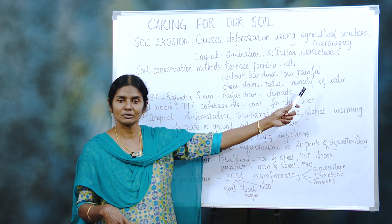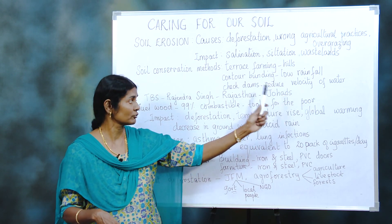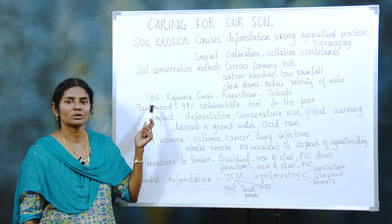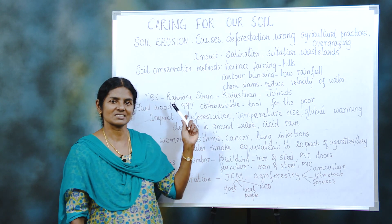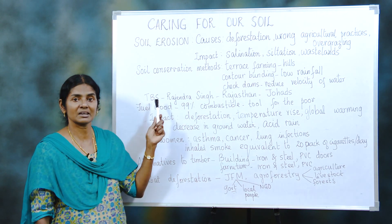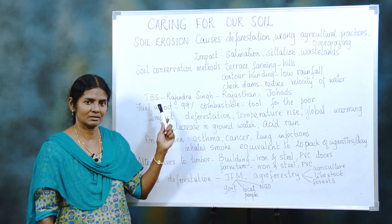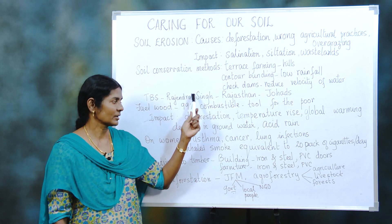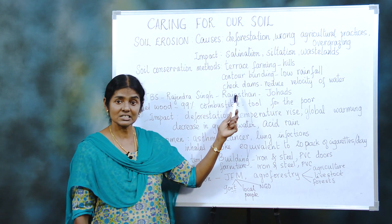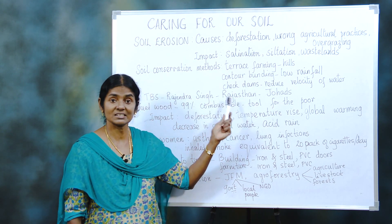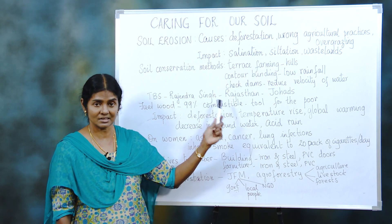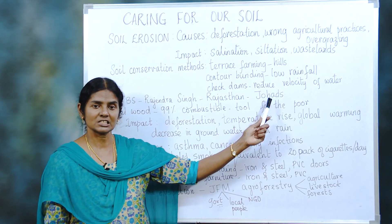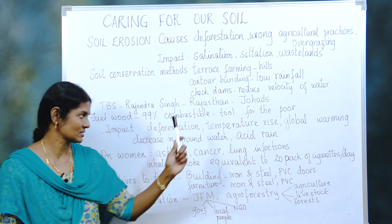Contour bunding is for areas where you have low rainfall. Check dams reduce the velocity of water. When we think about check dams, we cannot miss Tharun Bharat Sangh — a very important organization founded by Rajendra Singh, who is called the Water Man of India. It is initially started in Rajasthan and has spread to different states. Its speciality is johads.